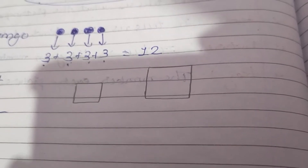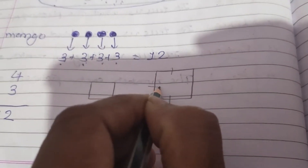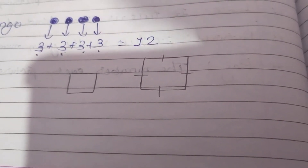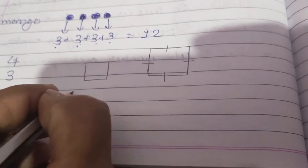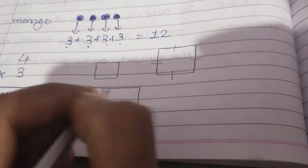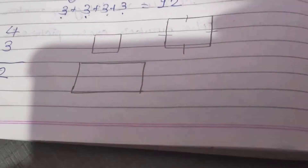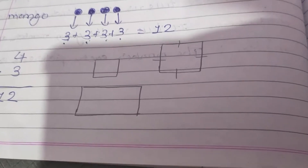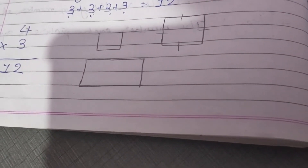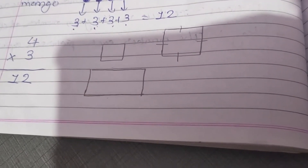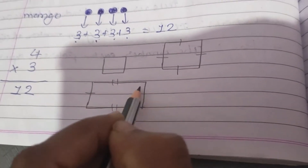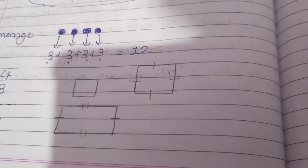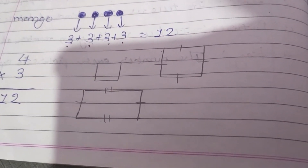इस तरफ की side, इस तरफ की side, इस तरफ की side, और इस तरफ की side — all sides are equal, same size होती है। Then after rectangle — rectangle और square दोनों में difference होता है। Rectangle की जो opposite side होती है, वो equal होती है। But square के अंदर all sides are equal। यह difference आपको पता होना चाहिए।